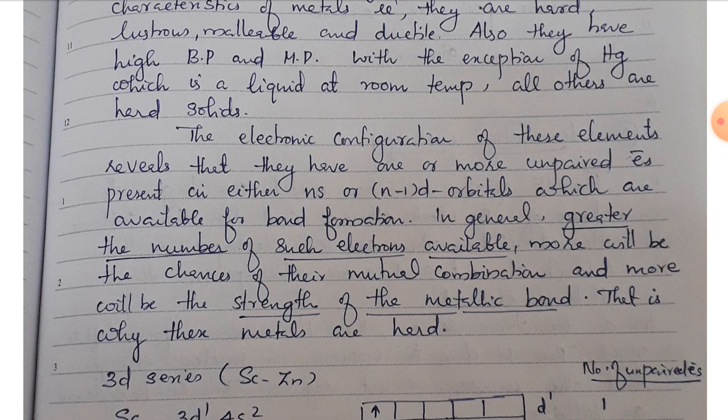Greater the number of such electrons available, more will be the chances of their mutual combination and more will be the strength of the metallic bond.